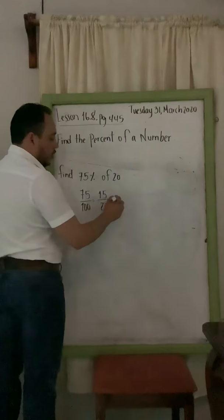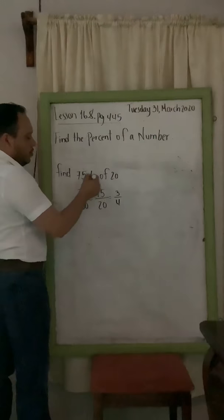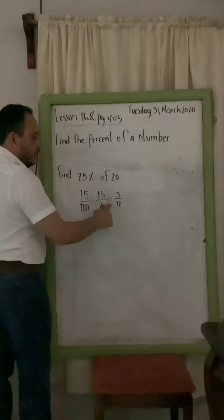And then you keep on simplifying because the two of them are divisible by 5. So now we know that 75% equals 3/4. Now that you have 3/4,